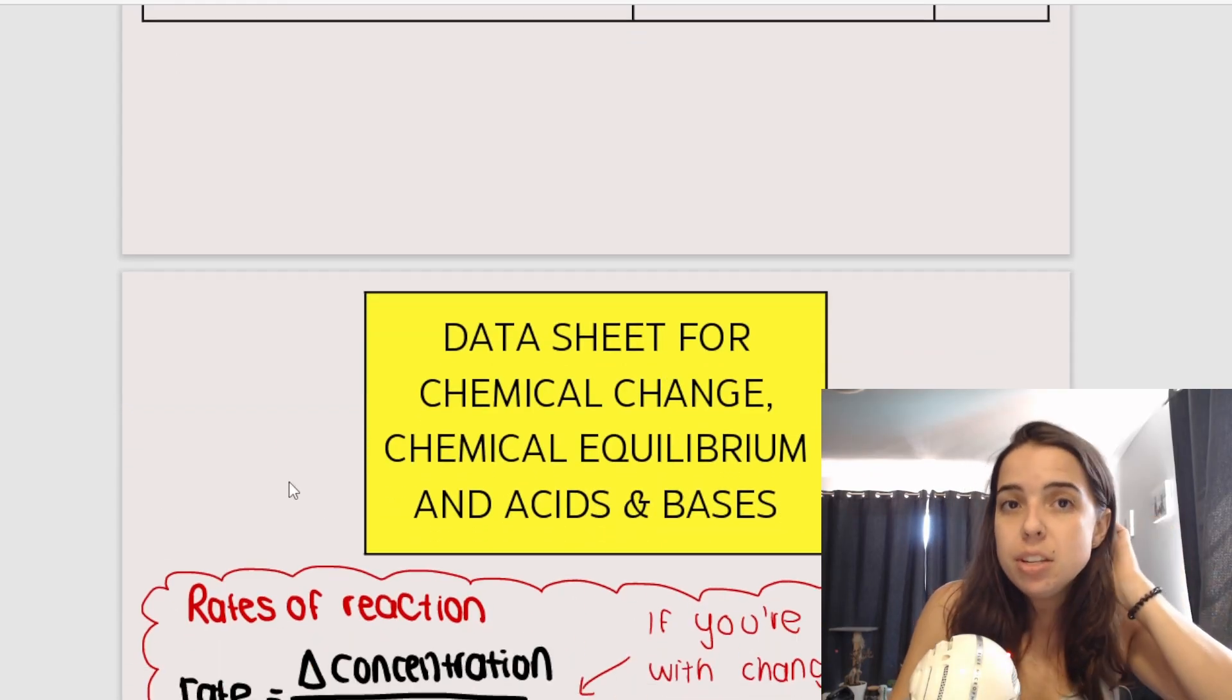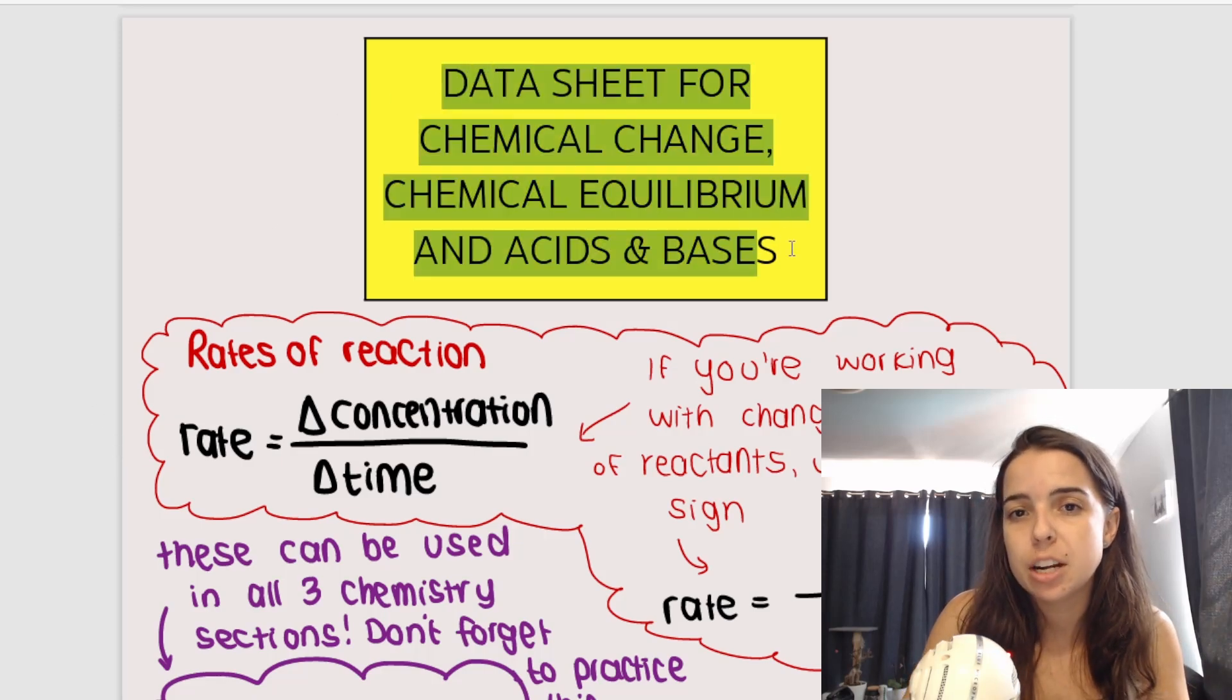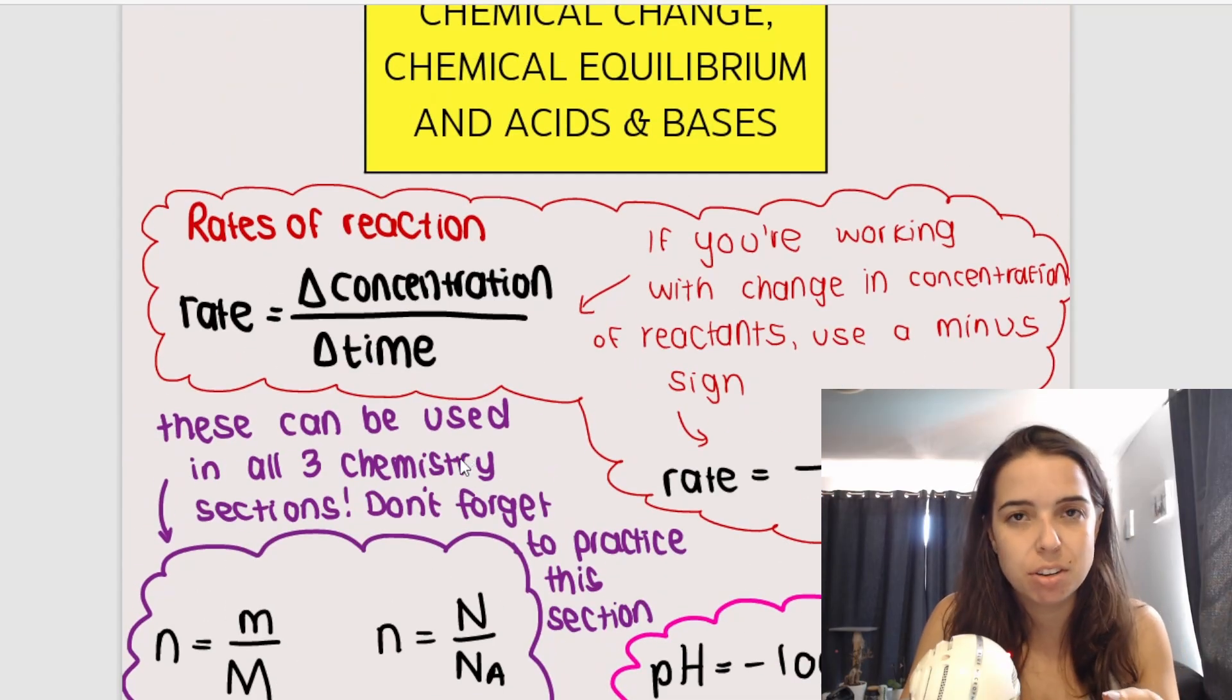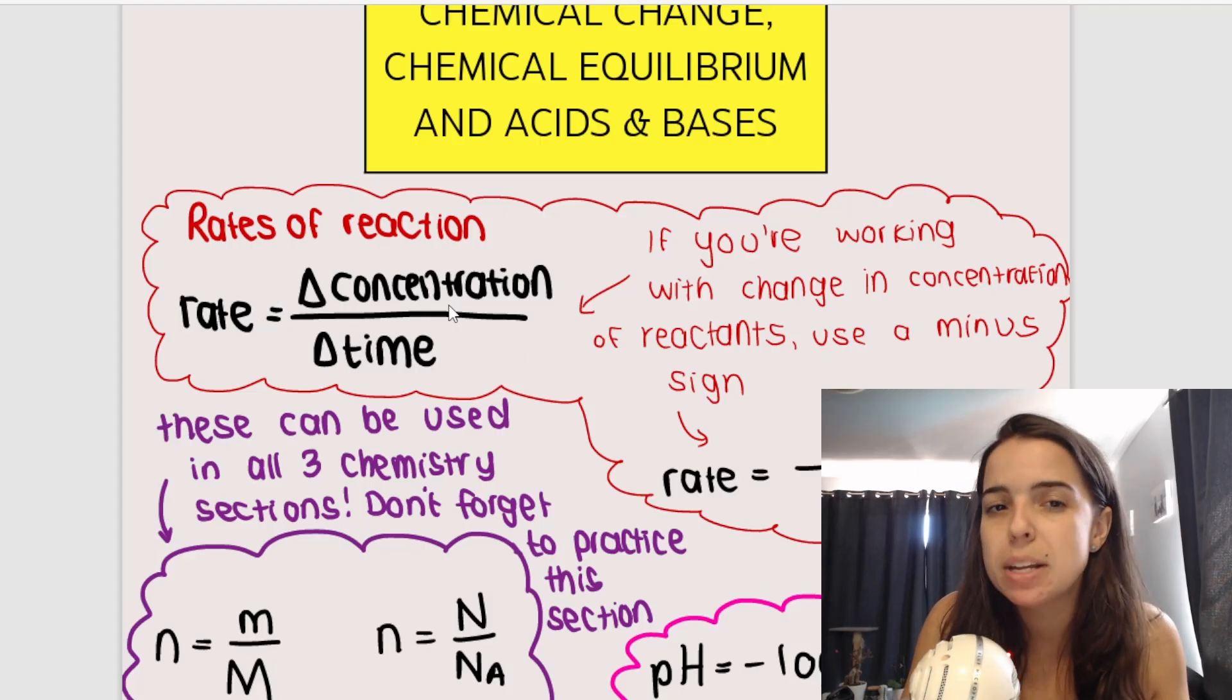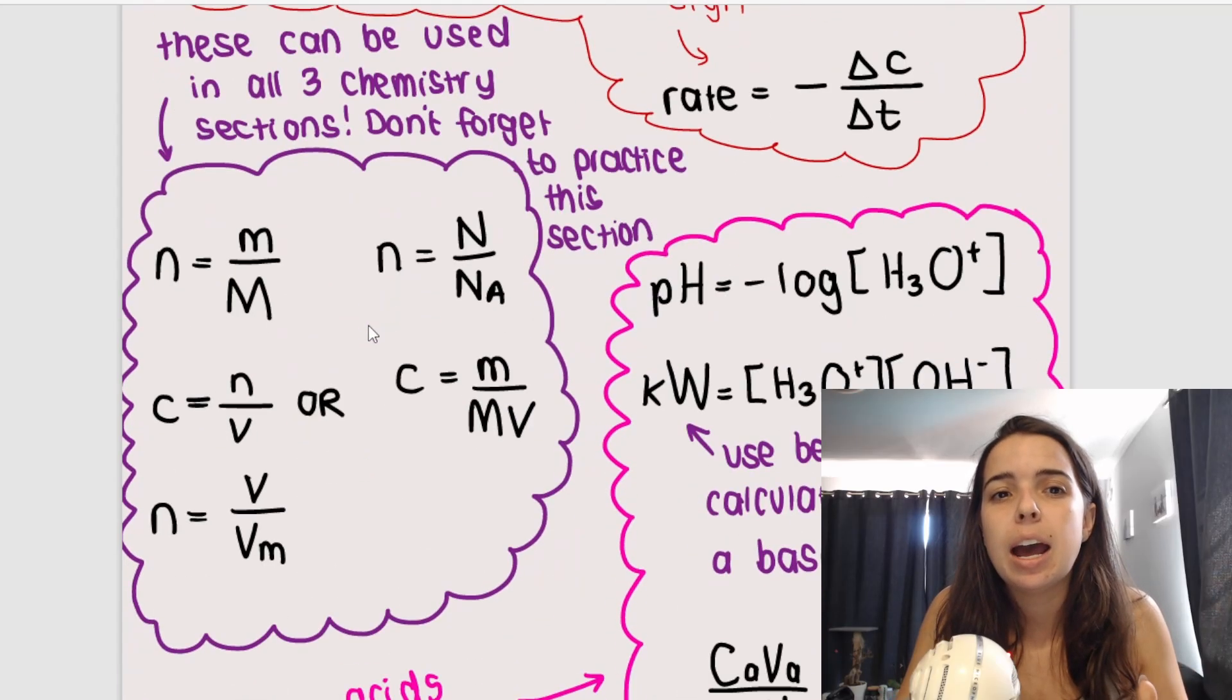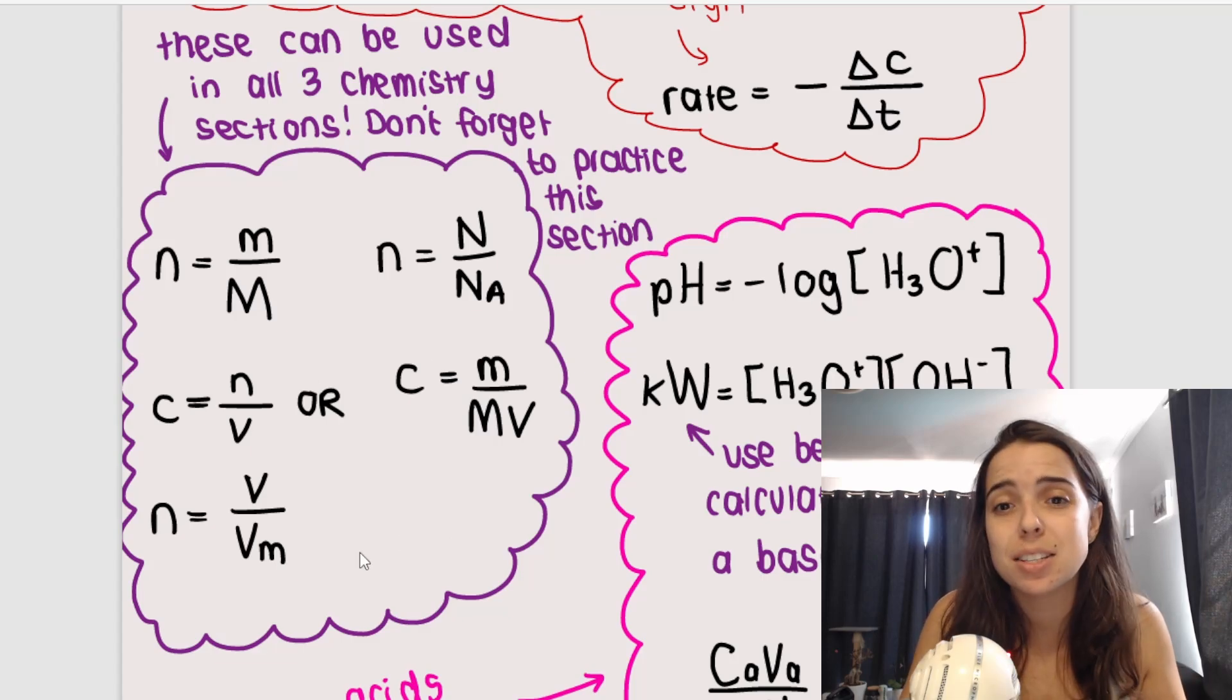Now again, nice thing about this document, the free document that you can download, is that I have a data sheet for all of these chemistry sections. So I've kind of combined all the formulas onto one page for you. And remember, not all of this is given on your actual formula sheet in your matric exams. Like for example, this one over here, rates of reaction, this isn't given on your formula sheet. Like I explained earlier, you need to know where this comes from. You need to just know when to use it and how to use it. And these things, this is stoichiometry. And I said, these can be used in all three chemistry sections. You need to practice this. And this is acids and bases.